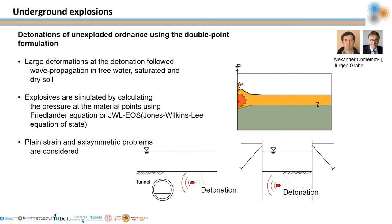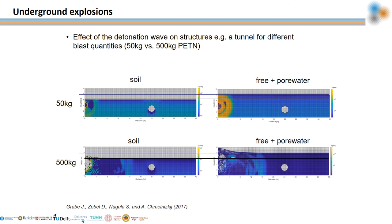MPM is used to simulate underground explosions and their interaction with structures. Explosives are simulated by calculating the pressure at the material point using an equation of state. Results are shown in terms of stress waves in soil and water for different blast quantities. For small blast quantities, displacements are relatively limited, while for large blast quantities soil displacements are very high, a hole forms in the soil, and free water can flow into the hole.